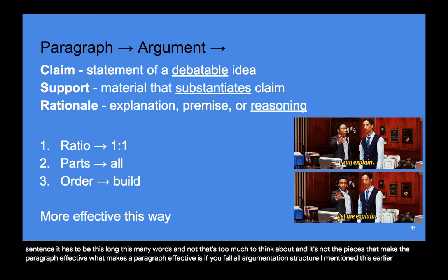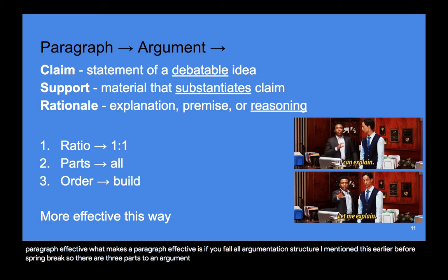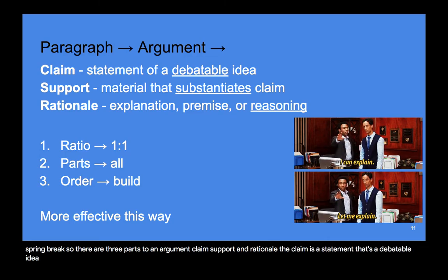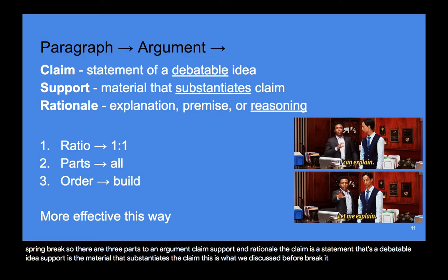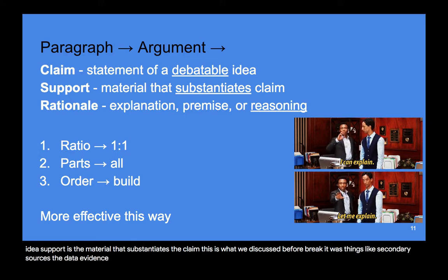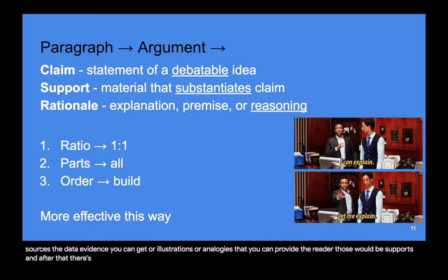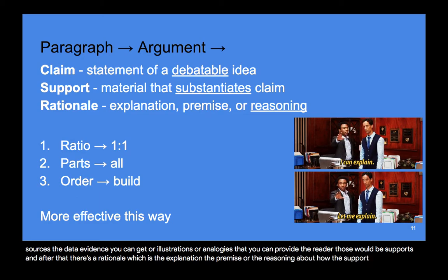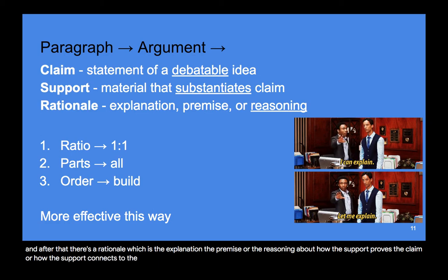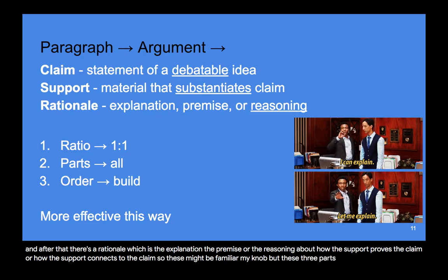There are three parts to an argument: claim, support, and rationale. The claim is a statement that's a debatable idea. Support is the material that substantiates the claim — things like secondary sources, data, evidence, or illustrations and analogies you can provide the reader. And after that, there's a rationale, which is the explanation, the premise, or the reasoning about how the support proves or connects to the claim. These three parts make an argument effective.